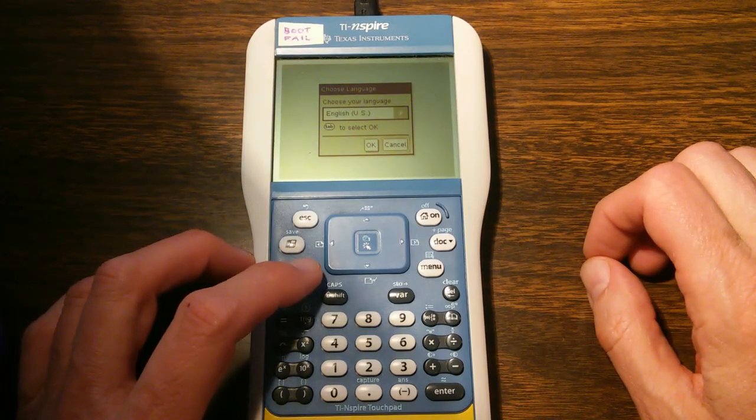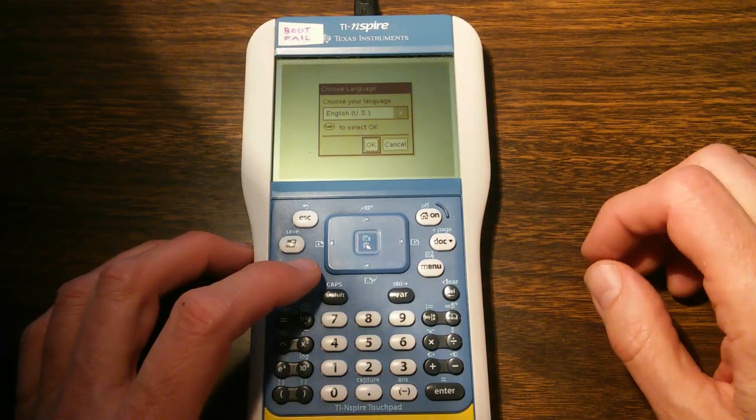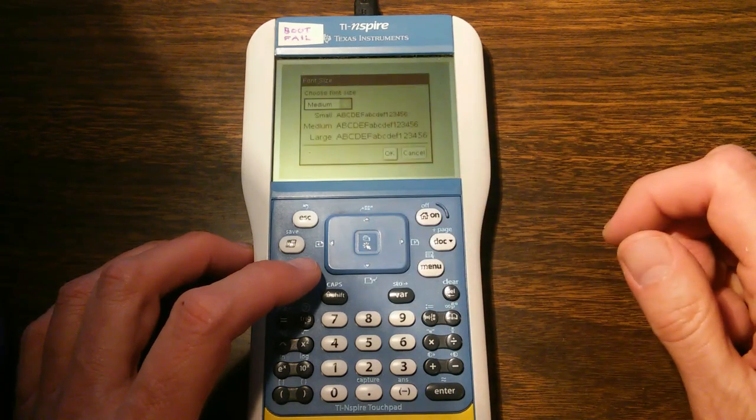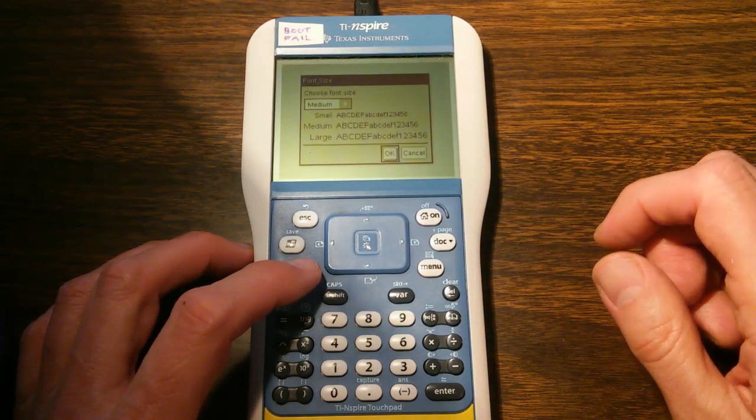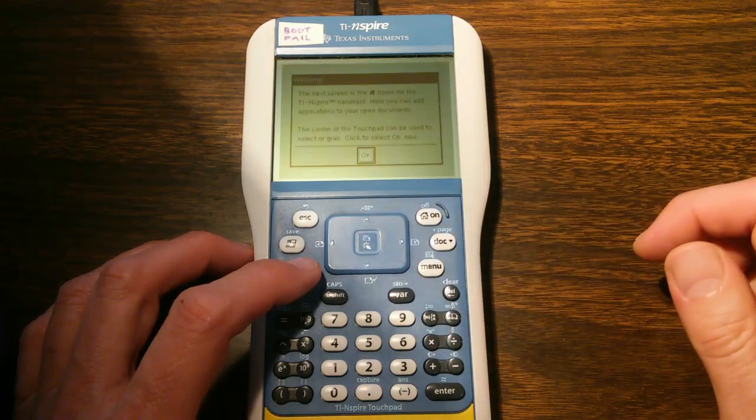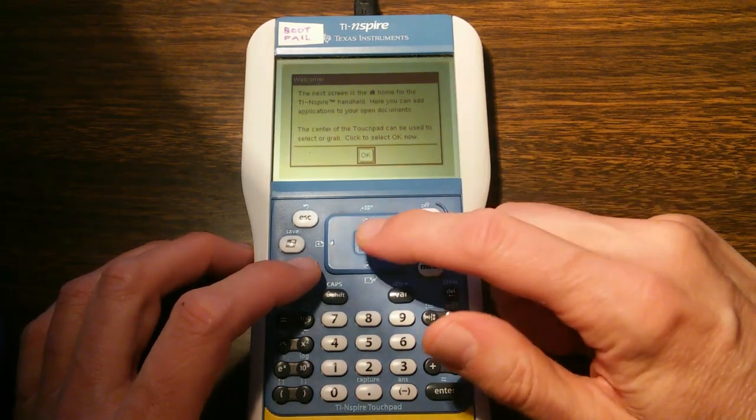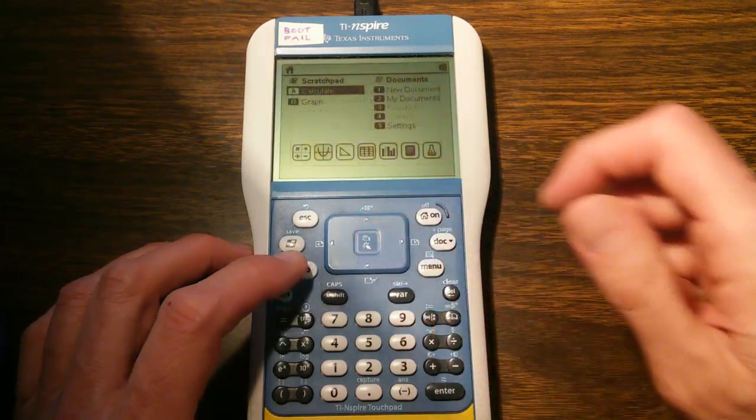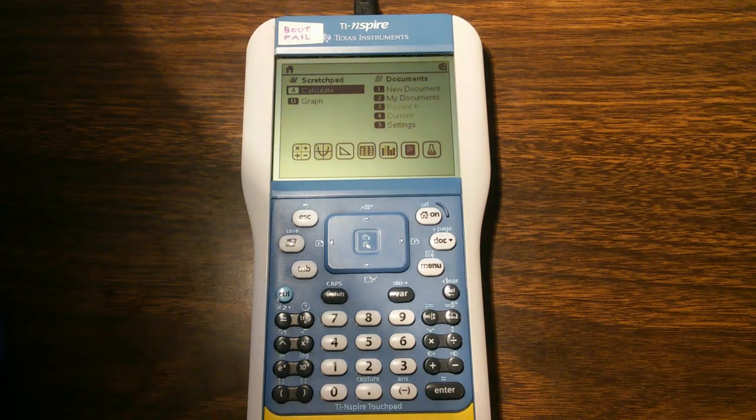Now it's going to ask us a few questions like what language are we going to be using. We use the tab key to go through the choices. English would be a good choice. And our font size, medium would be good. And one last OK. And there we go, we're up and running.